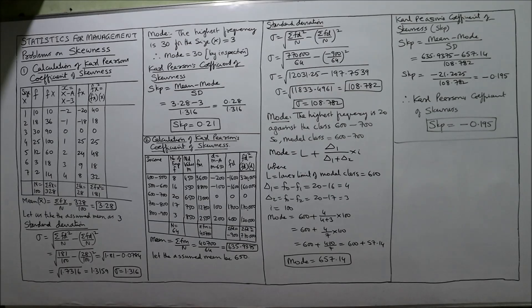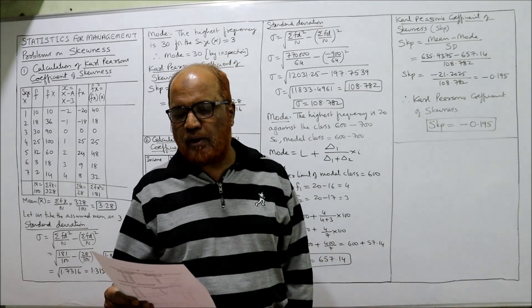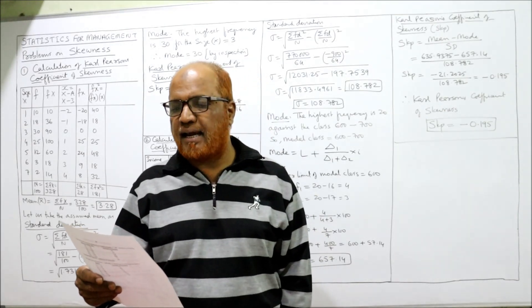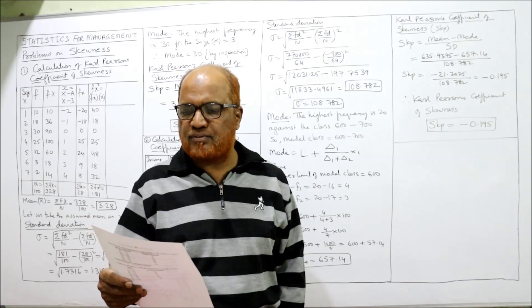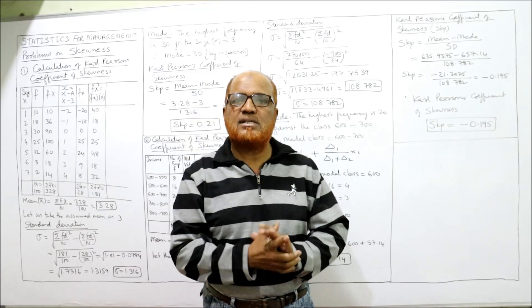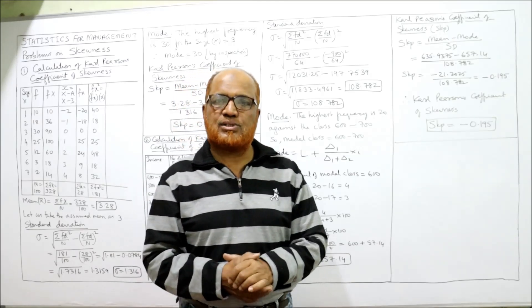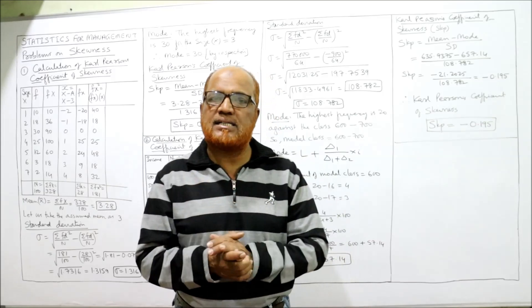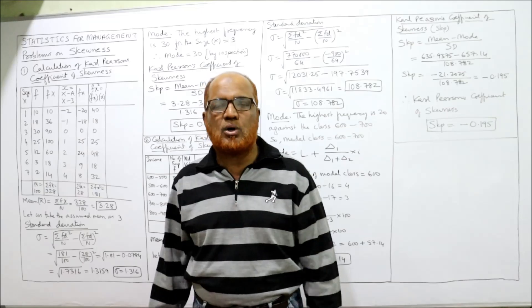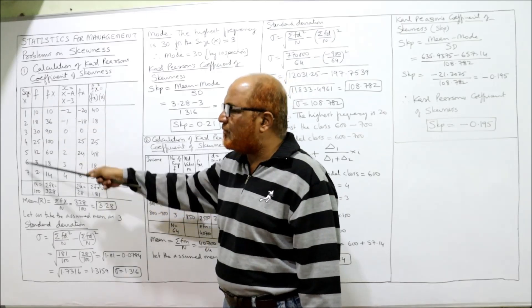First problem: Calculate Carl Pearson's coefficient of skewness from the following data. Size: 1, 2, 3, 4, 5, 6, 7. Frequency: 10, 18, 30, 25, 12, 3, 2. This is a discrete series because size and frequency are given — class interval is not given. If class interval were given, it would be a continuous series.